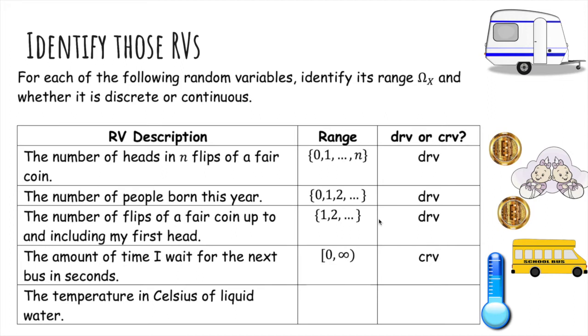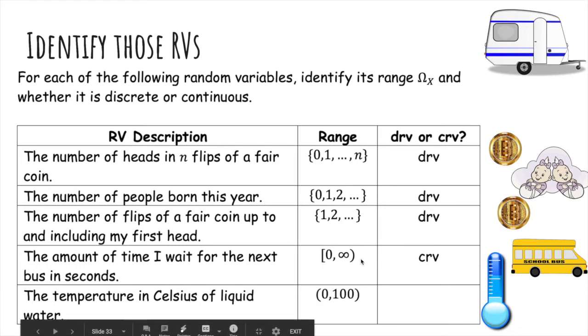The temperature in Celsius of liquid water, well, water freezes at zero and boils at 100, so anywhere not including is the range of liquid water. And again, this is an interval, so it's a continuous random variable.